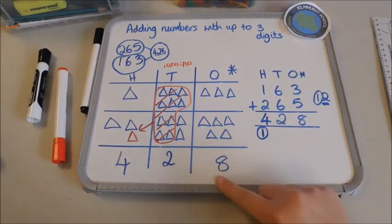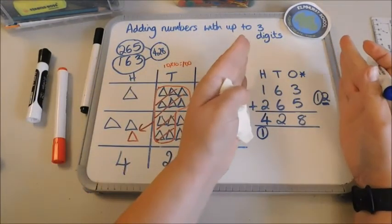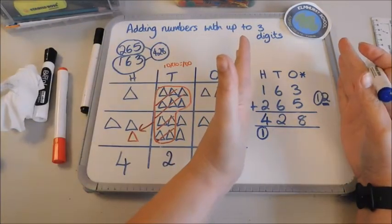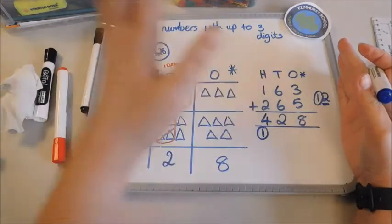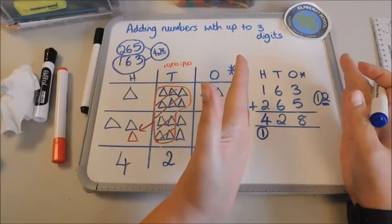Now if the children aren't ready to move on to just the formal written method on its own, then sometimes we might have them using the place value grid and completing the formal method at the same time so they can see how it links.